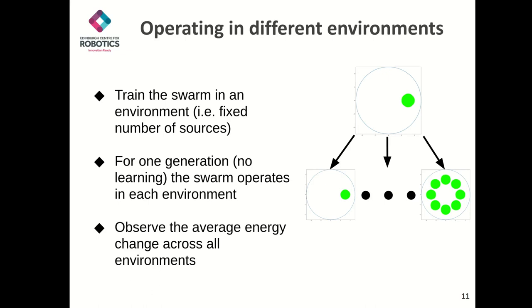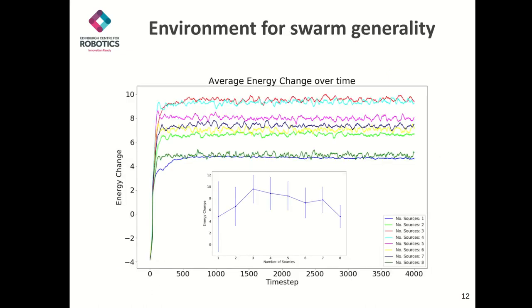They did this once with no learning in between. Similar to before, we trained multiple swarms and found the average swarm behavior when operating in these different environments. The graph presented here shows the average energy change of all agents in the swarm in all of the environments. Swarms that were trained with three and four sources performed the best when operating in different environments, while those trained in one and eight sources performed the worst.